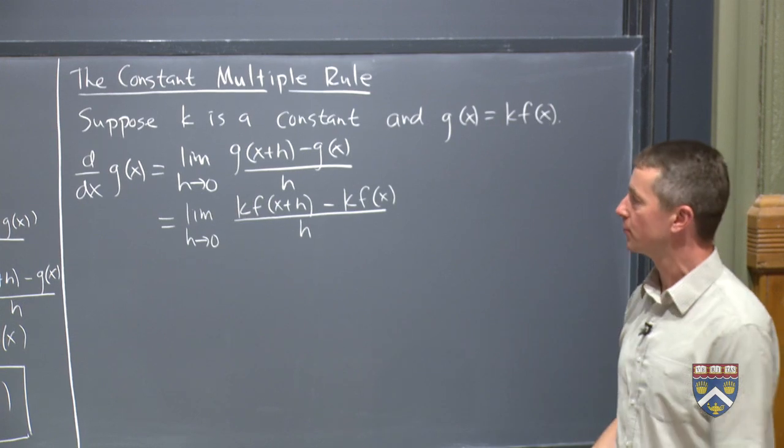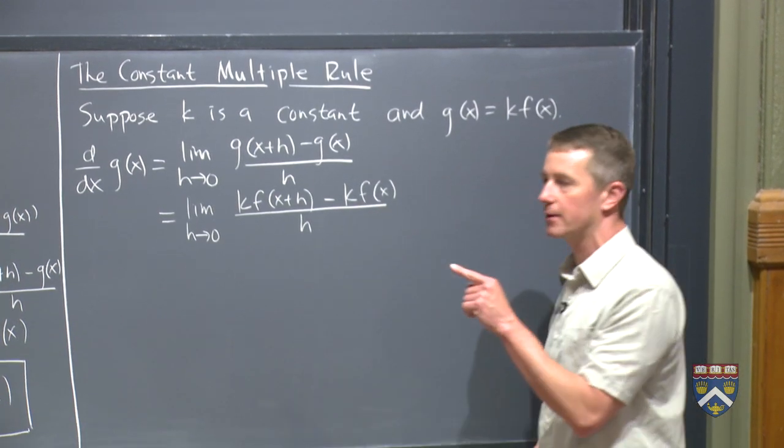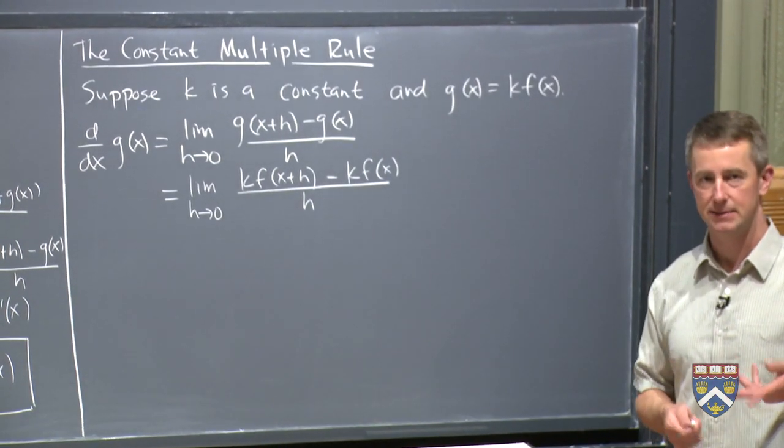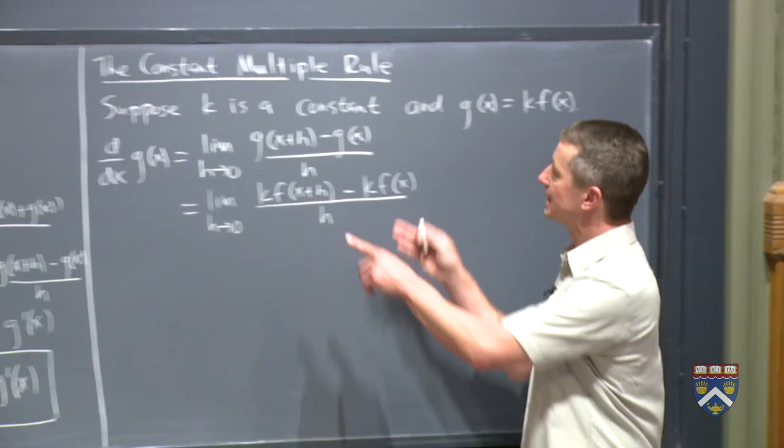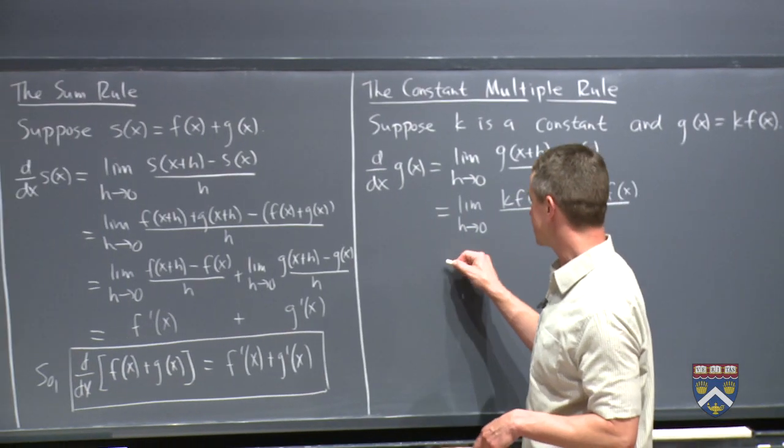So similarly to what we did with the sum rule, you might see hidden inside of here something that you already recognize, namely the expression for f prime of x. The problem is that there are these k's in there. However, k is a constant.